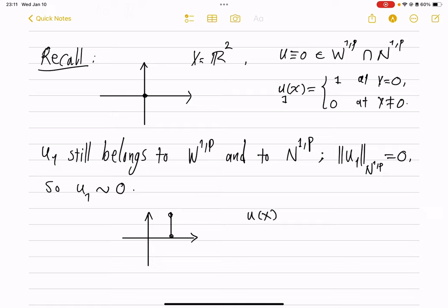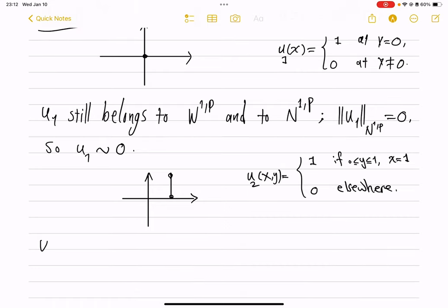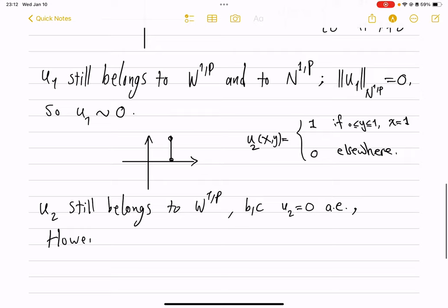Then we adjusted our example and we saw that we don't have as much leisure when we remove a line segment. So if u_2 of x is defined to be 1 if y is between 0 and 1 and x is equal to 1, just one line segment, and 0 elsewhere. Now this u_2 function still belongs to W^{1,p}. This is because W^{1,p} functions remain in the same equivalence class if you change the values on a set of measure zero. However, u_2 did not belong to N^{1,p}.